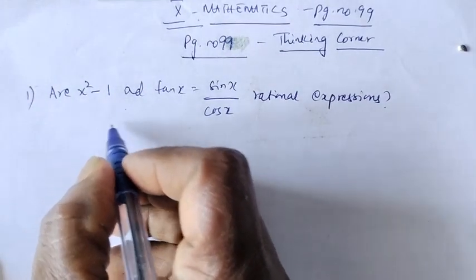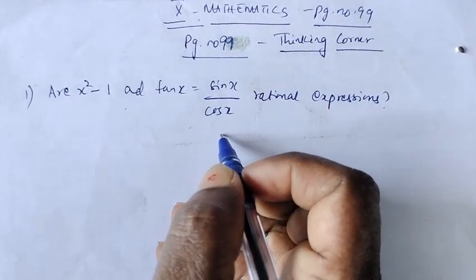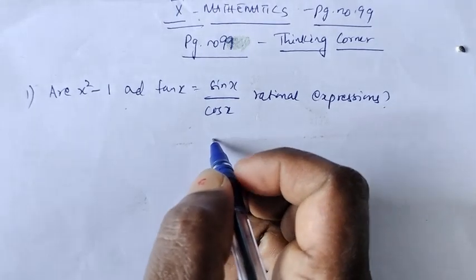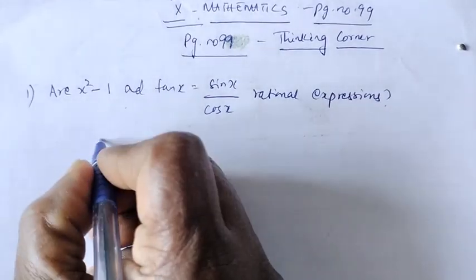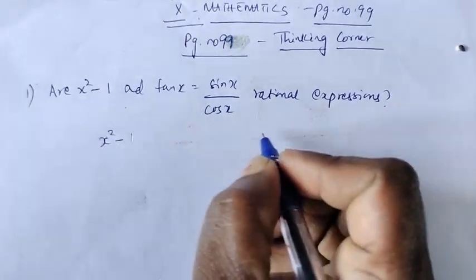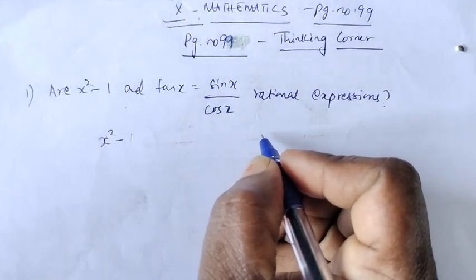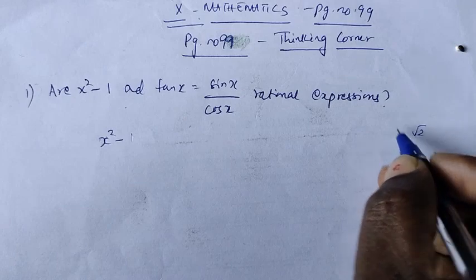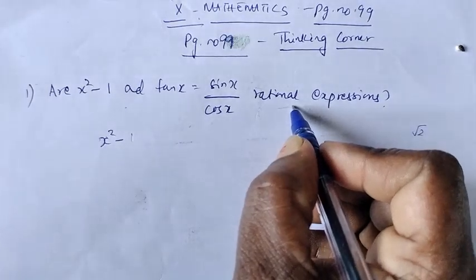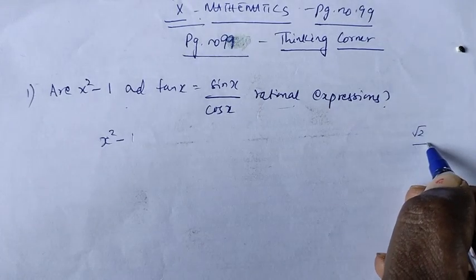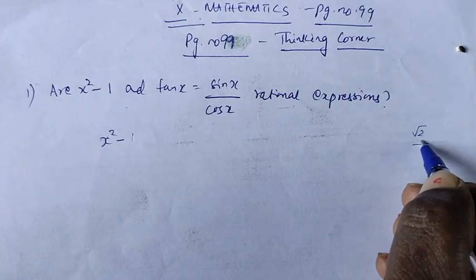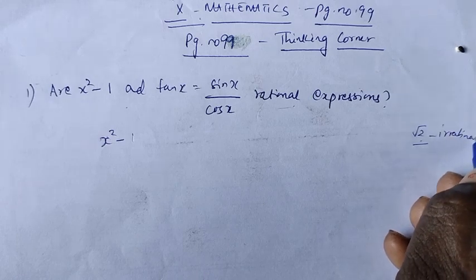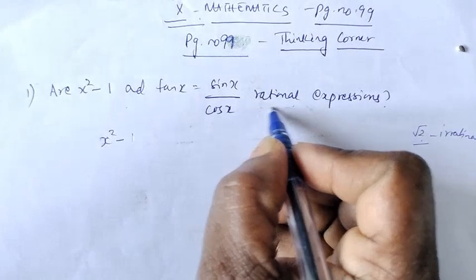Is x minus 1 and tan x equal to sin x by cos x rational expressions? If x is a rational expression, it should not have a root. If it comes under a root, it is an irrational expression. If there is no root, it is a rational expression.